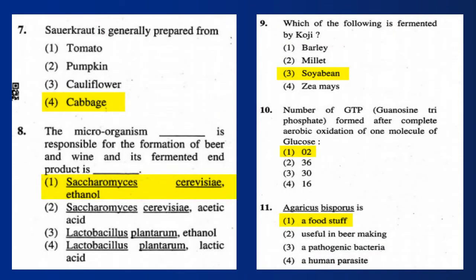Question 7: Sauerkraut is generally prepared from cabbage. Question 8: The microorganism responsible for the formation of beer and wine is Saccharomyces cerevisiae, and the fermented end product is ethanol.